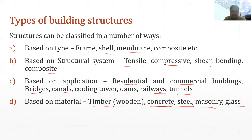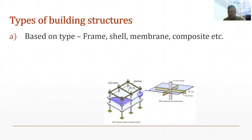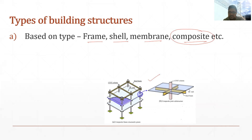I will be explaining all four of these bases. Now, talking about classification based on type: in this category we may have a framed structure, a shell structure, a membrane structure, or a composite structure. In the case of composite construction, generally the structure consists of various elements — those elements can be a horizontal member, a vertical member, or a plate-like element.